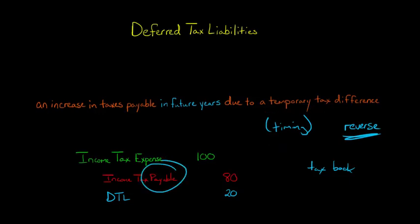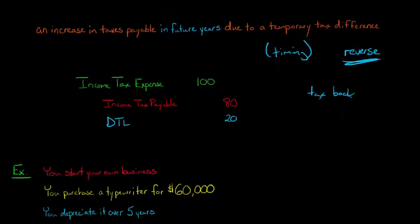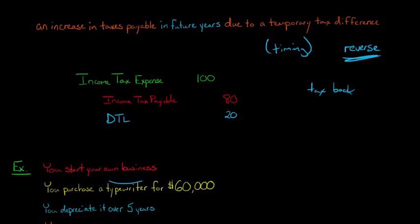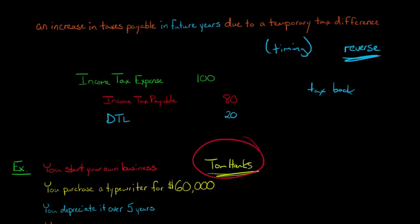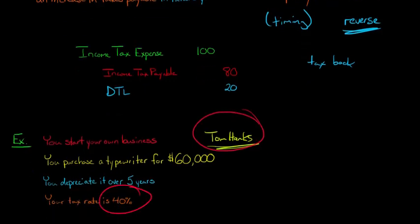At some point, your tax payable is actually going to be higher than the income tax expense, in which case you'd be debiting the deferred tax liability. For a more comprehensive example: let's say you start your own business, you need office equipment, and your friend Tom Hanks convinces you to buy a special typewriter — signed by him personally — for $60,000. You depreciate this typewriter over five years with a tax rate of 40%.